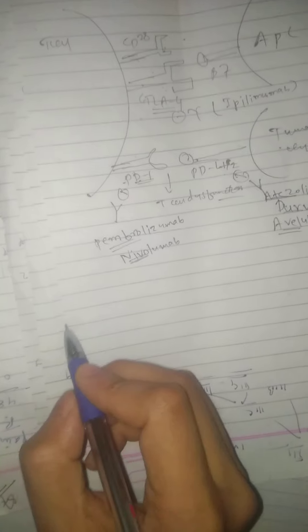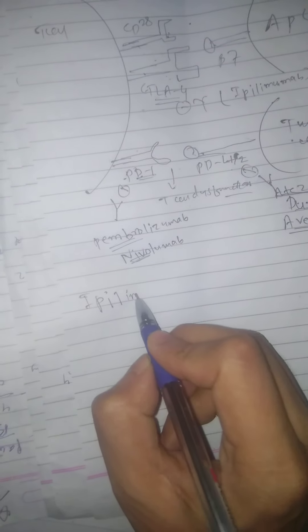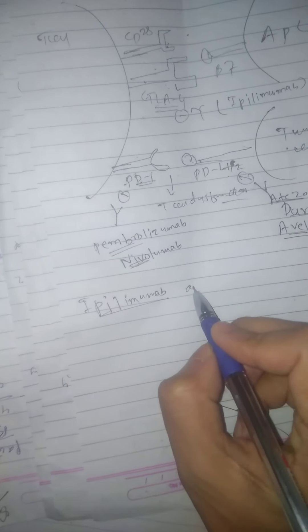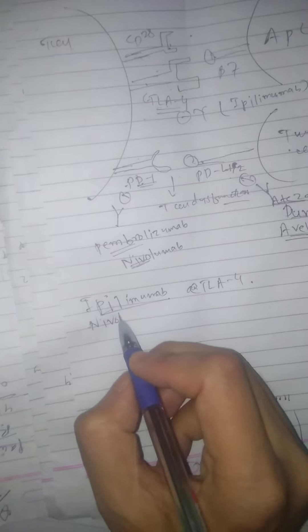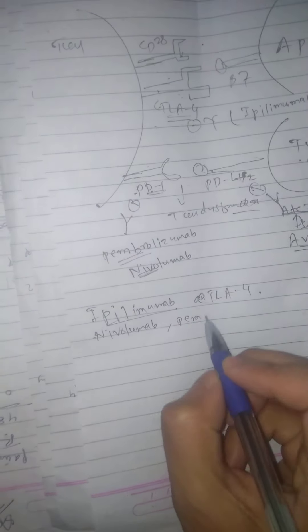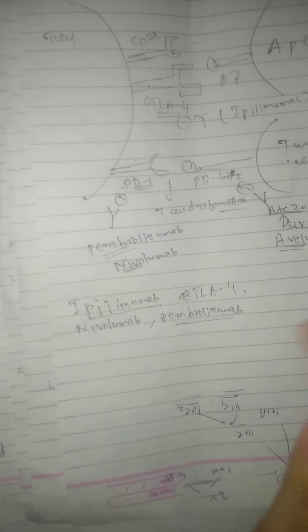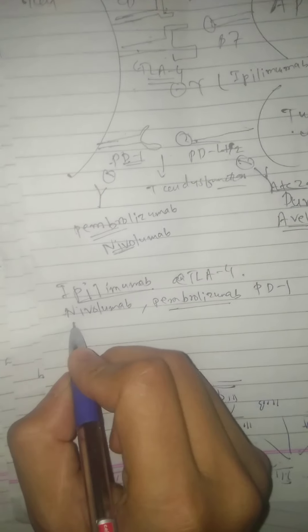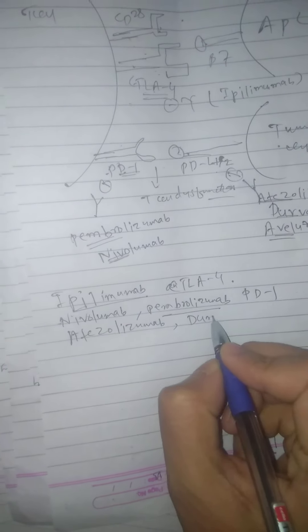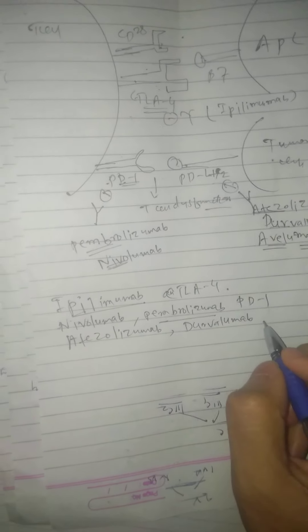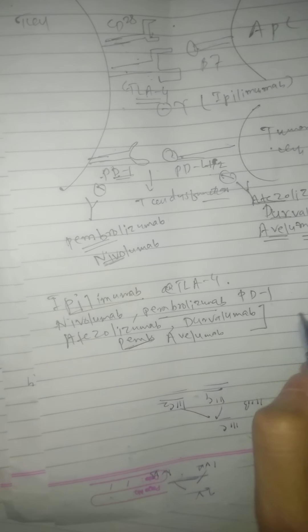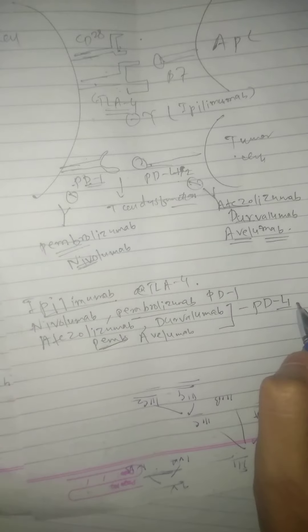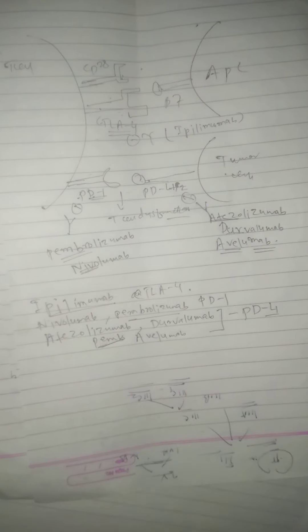To summarize the drugs we learned today: ipilimumab is an antibody against CTLA-4. Nivolumab and pembrolizumab are antibodies against PD-1. Atezolizumab, durvalumab, and avelumab are antibodies against PD-L1 on tumor cells.